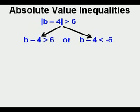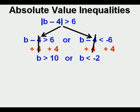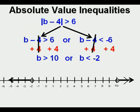Since more is ore, we divide it into two parts. b minus 4 is greater than 6, or b minus 4 is less than negative 6. We add 4 to each side of each inequality. b is greater than 10, or b is less than negative 2, excuse me. Here is the absolute value inequality graphed on a number line. Here we have greater than 10 and less than negative 2.